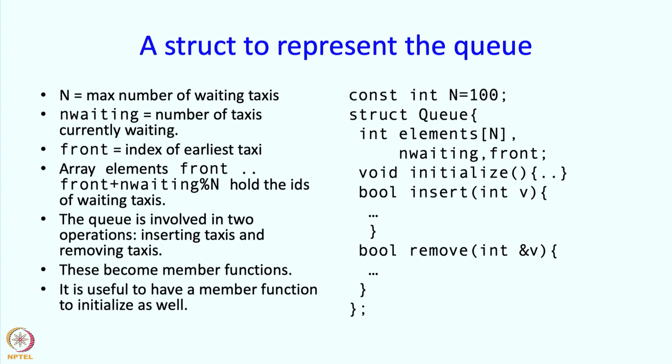Let me show you what each of these functions is going to look like. So let's start with initialize. What do we want in initialization? If you remember when we created the queue, we said that n waiting and front should become 0. That's the bare minimum that we want.